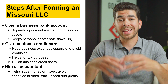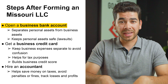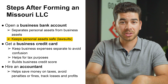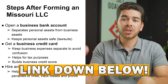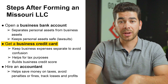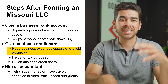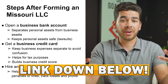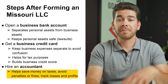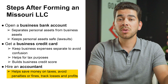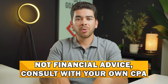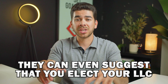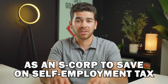After forming your LLC, there are some important next steps. First, open a business bank account to keep your personal assets separate from your business assets, protecting them from lawsuits — we'll leave links to our favorite business banks below. Next, get a business credit card to keep business expenses separate, help with taxes, and build your business credit score. Lastly, hire an accountant to save money on taxes, avoid penalties or fines, and track profits and losses. We recommend not doing your own taxes; hire a professional. Depending on your profits, they may suggest electing your LLC as an S corp to save on self-employment tax.